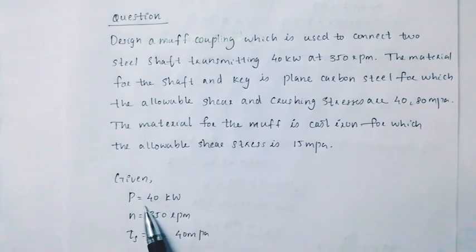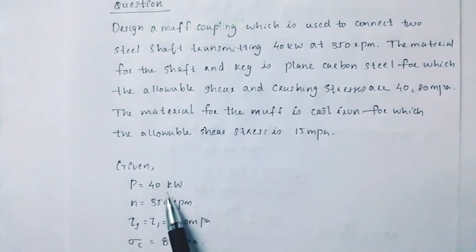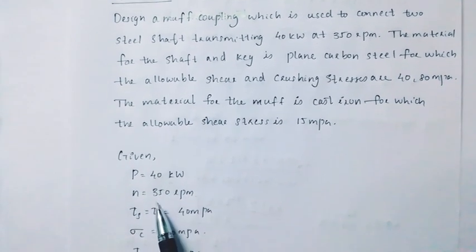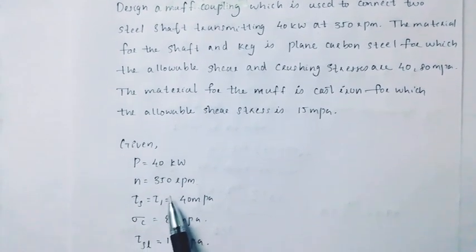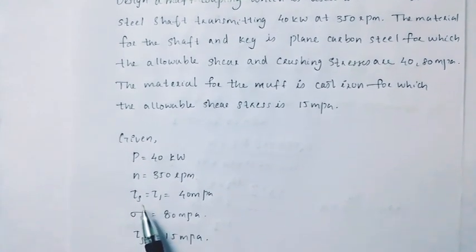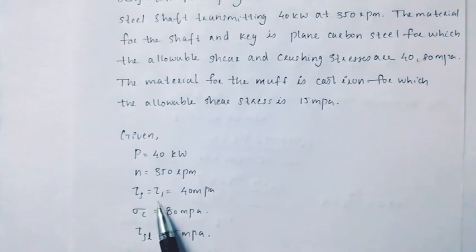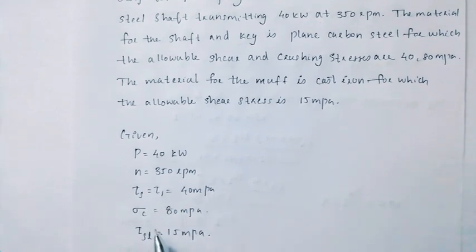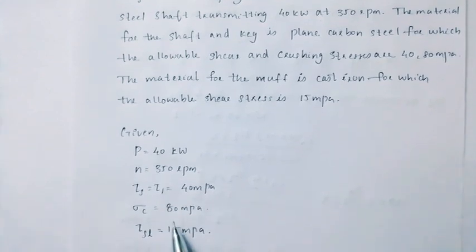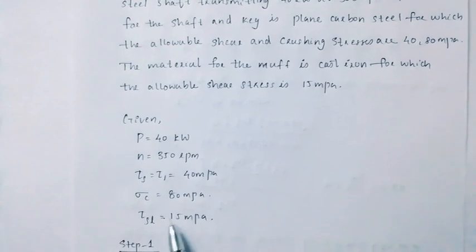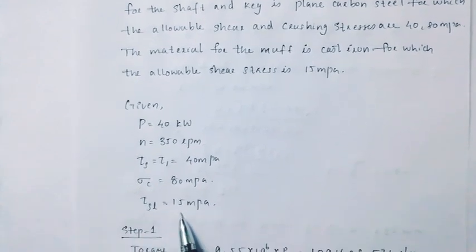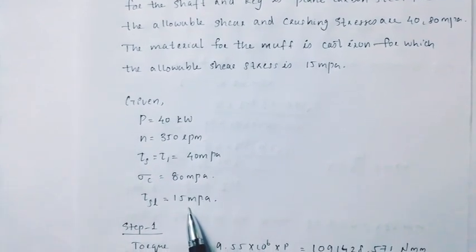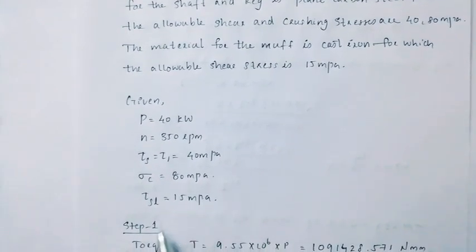Given data: P = 40kW, N = 350rpm, allowable shear stress for shaft τ_s = 40MPa, crushing stress σ_c = 80MPa, and allowable shear stress for muff τ_sl = 15MPa.